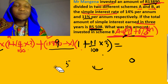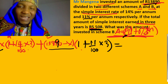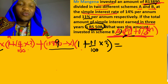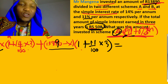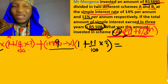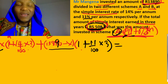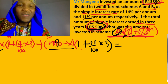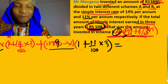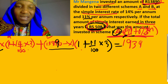For Mr. Mangana, the total amount - represented by A - is what you invested plus what you earned together. So the total amount is found by adding the two scheme results together: 13,890 plus 5,504 gives us 19,394.